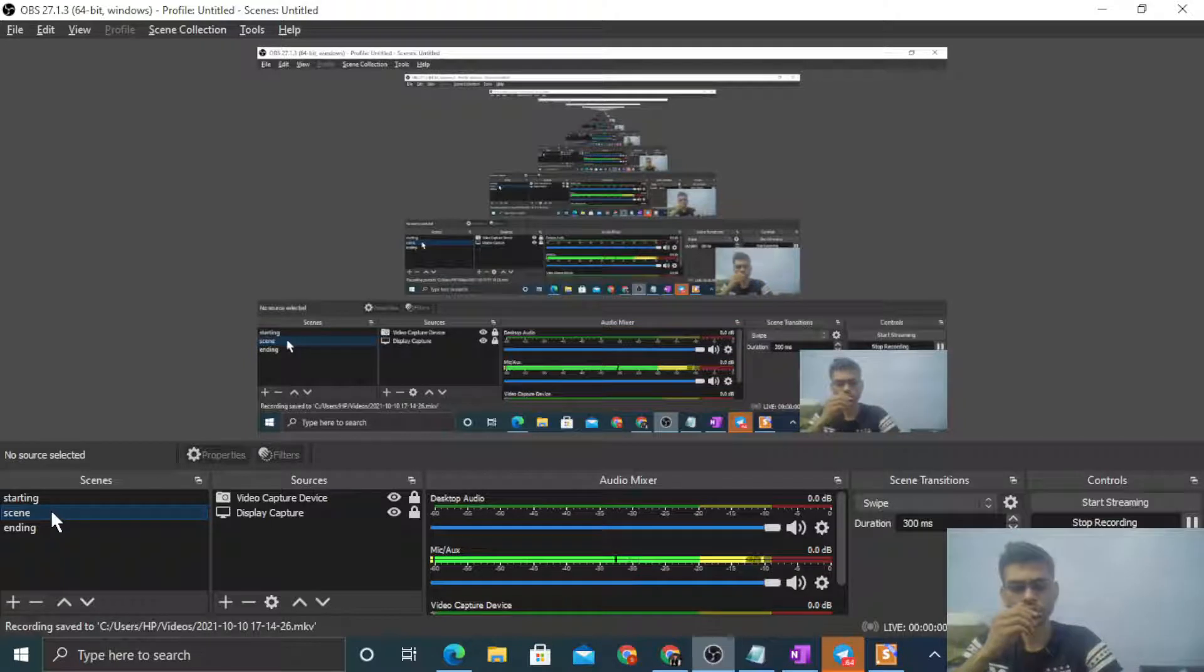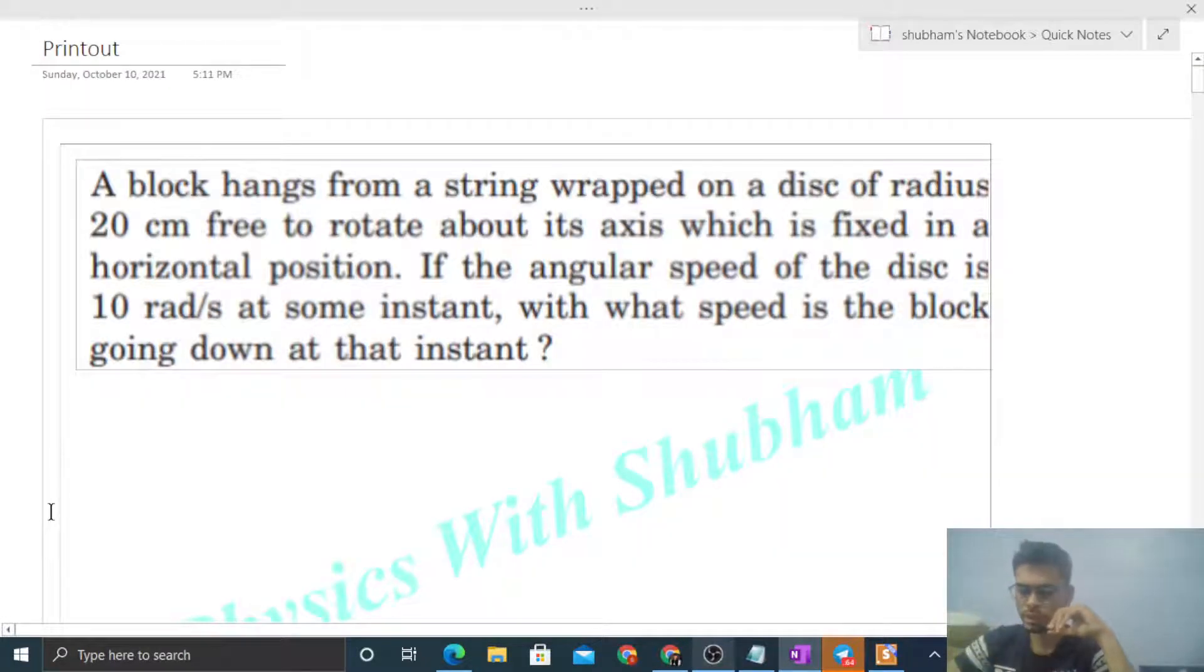Okay, hi everyone. Today let's discuss this interesting problem. A block hangs from a string wrapped on a disk of radius 20 centimeter, free to rotate about its axis which is fixed in a horizontal position. If the angular speed of the disk is 10 radian per second at some instant, with what speed is the block going down at that instant?